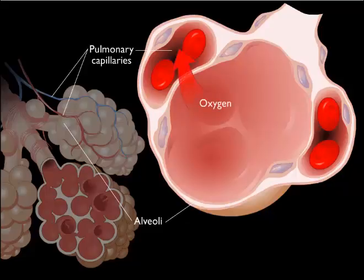Oxygen diffuses across this membrane into the blood, while carbon dioxide moves from the blood back into the air where it is expelled during exhalation.